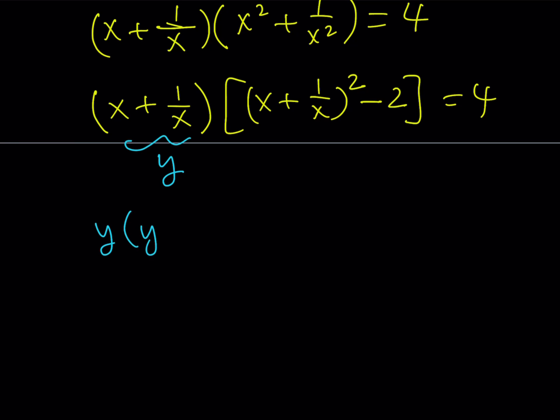y times y squared minus 2 is equal to 4. And from here, I do get a cubic equation. That's kind of like a nice cubic though. It's solvable. y cubed minus 2y is equal to 4. Remember, the first method gave us an integer solution, so this should also give us an integer solution.